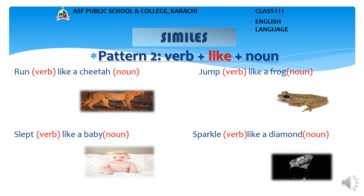Now we will learn the second pattern to form a simile. Pattern number 2: Word + like + noun. Example 1: Runs like a cheetah. In this phrase, 'run' is a verb — action words that describe what the subject is doing — and 'cheetah' is a noun. This simile uses the word 'like' to compare runs and cheetah.